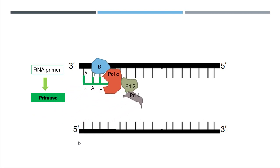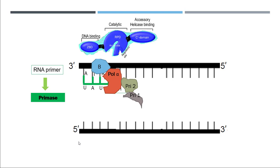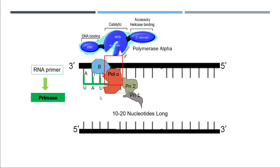The RNA primer is made by an enzyme called primase, which is a group of proteins that attaches to the strand and makes the RNA primer. In prokaryotic DNA replication, the primase is called DNA-G and is a single protein with three subunits. In eukaryotic organisms, we have a bunch of different proteins, and the RNA primer in eukaryotes can be extended from approximately 10 to 20 nucleotides. The major protein attaching the RNA nucleotides to make the RNA primer is polymerase alpha.